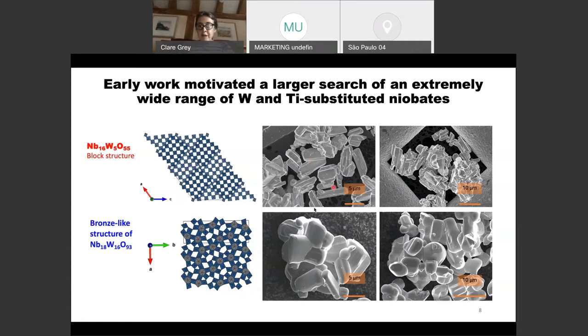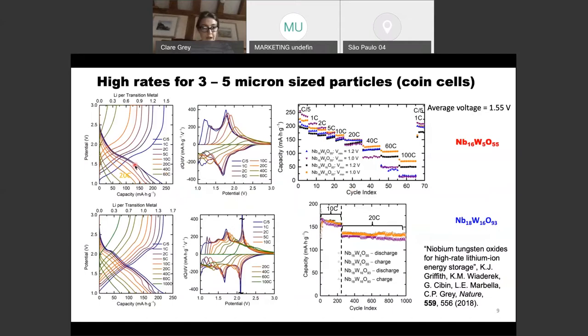In the end, we came across the two optimum structures: the Nb16W5, which is a block structure, and a composition with a similar niobium to tungsten ratio which then adopts the bronze structure. You can see that the syntheses again yield very large particles of five to ten microns in length. We were able to get, despite the particle sizes, very respectable performance at high rates. The block phase, even at 20C, you've retained more than 50% of the capacity. This is data showing this more clearly here as a function of C-rate. At 20C we're over 150 milliamp hours per gram. Similar performance for the bronze phase.